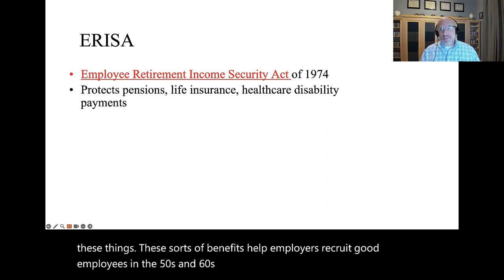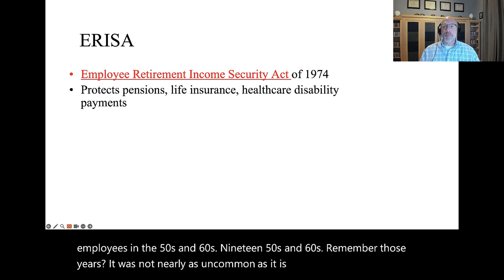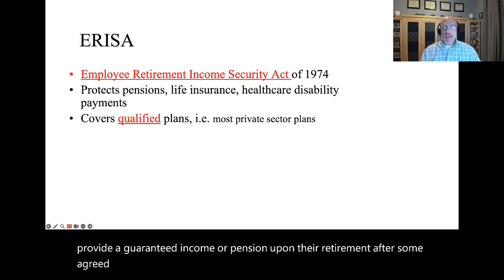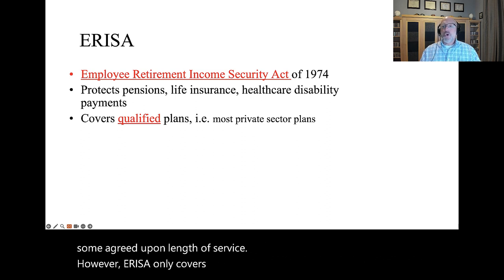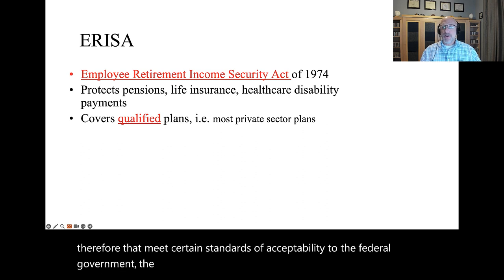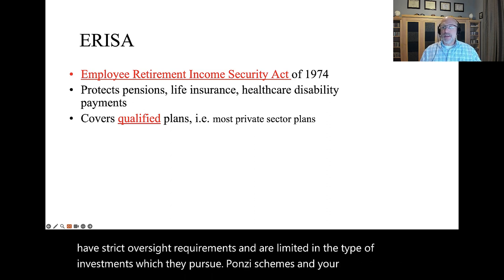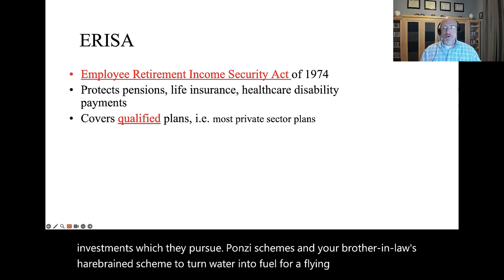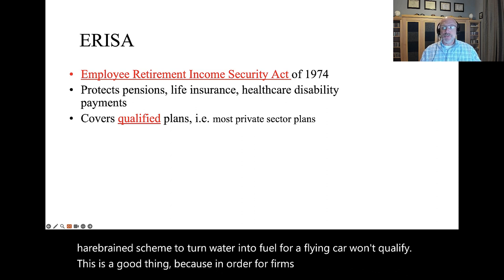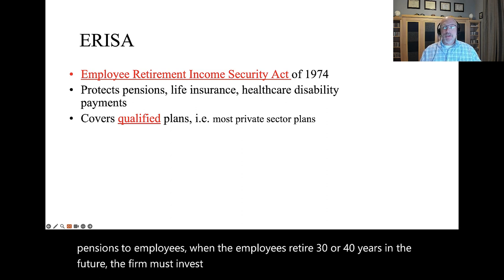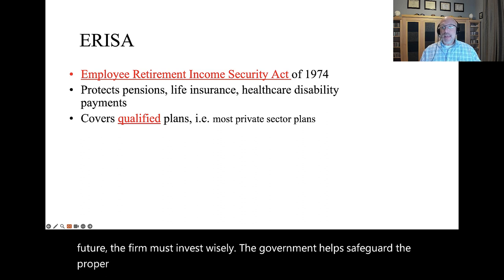In the 1950s and 60s, it was not nearly as uncommon as it is today for a company to provide a guaranteed income or pension upon retirement after some agreed-upon length of service. However, ERISA only covers so-called qualified plans that meet certain standards of acceptability to the federal government. These plans have strict oversight requirements and are limited in the type of investments they pursue. The government helps safeguard the proper investments that companies pay into on your behalf.